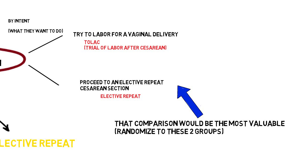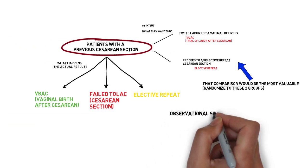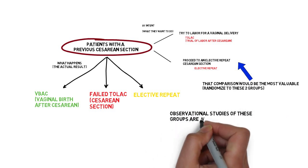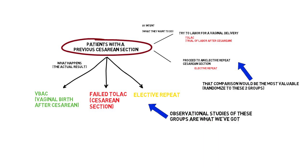However, it also points out that no randomized trials comparing maternal or neonatal outcomes between women attempting TOLAC and those undergoing repeat cesarean section exist. We don't need to spend any time discussing why randomization to the groups would be far more valuable than observational studies of patients who pick their groups, but that's what we've got.